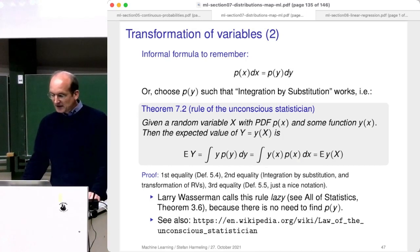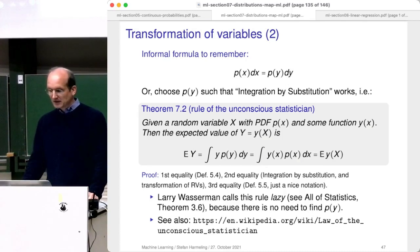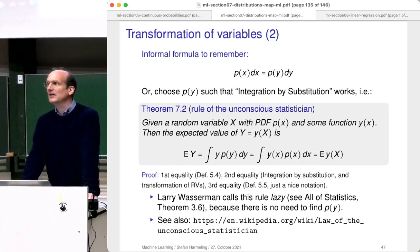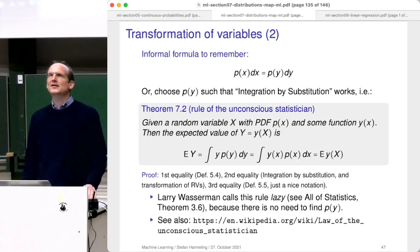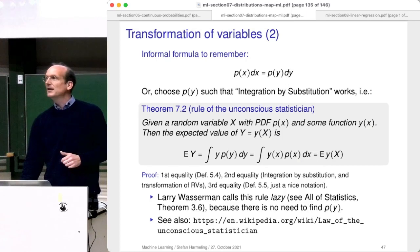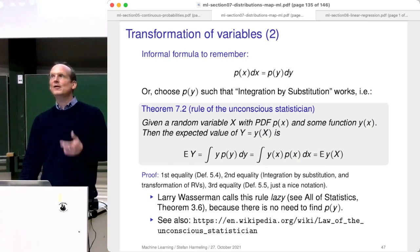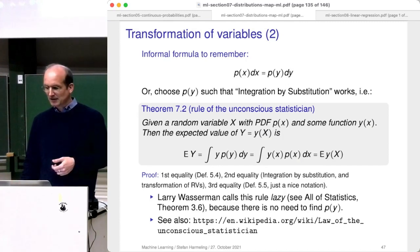This is also in Larry Wasserman's book 'All of Statistics' — he calls this rule lazy. Why? Because to calculate the expectation of Y, you don't have to find p of y; you can write it in terms of p of x. It also has the name of the unconscious statistician because it's unconsciously being applied in this lecture — I defined that the expectation of a more complicated function is this integral, but that's only valid because of this theorem.